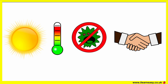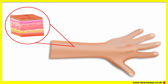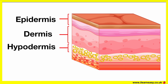We can feel different types of material. For example, some things can be hard, soft, wet, dry, hot, cold, etc. Our skin is made up of three important layers, known as the epidermis, dermis and hypodermis.